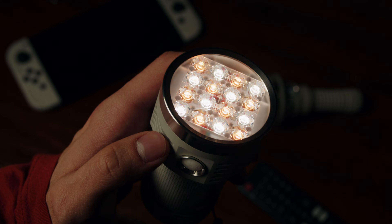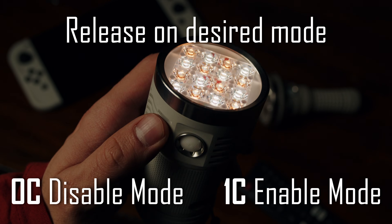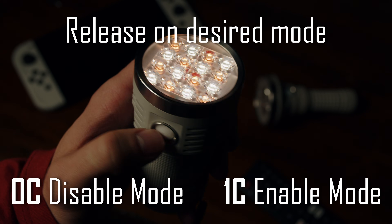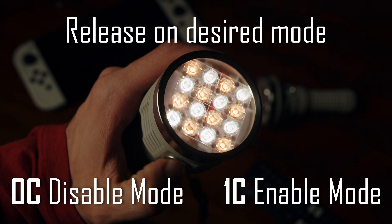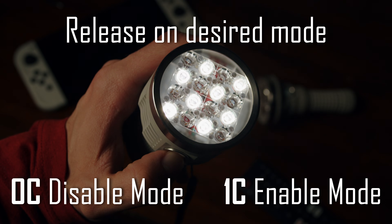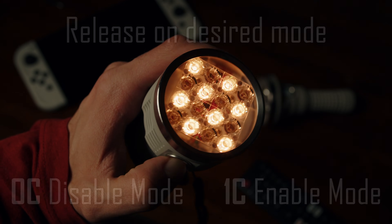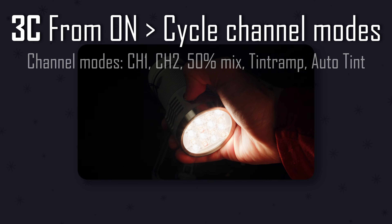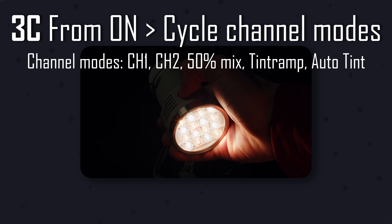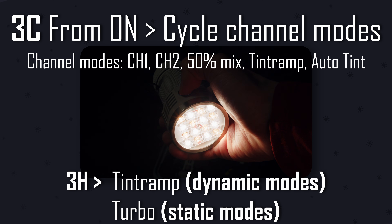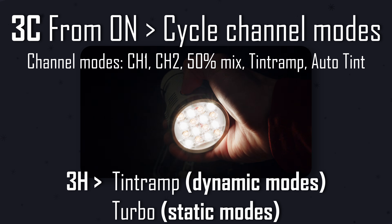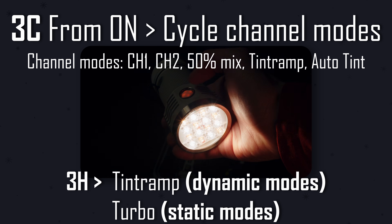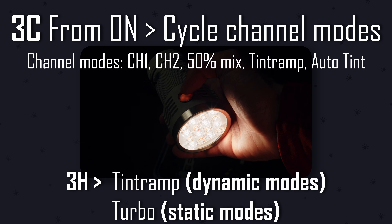Release on a mode and the light will begin buzzing or flashing rapidly. Press once to enable the mode, or do nothing to disable the mode. While the light is on, a simple triple press will cycle between the available modes. 3H from there will ramp between channels on the relevant modes, or will activate momentary turbo on the static modes.